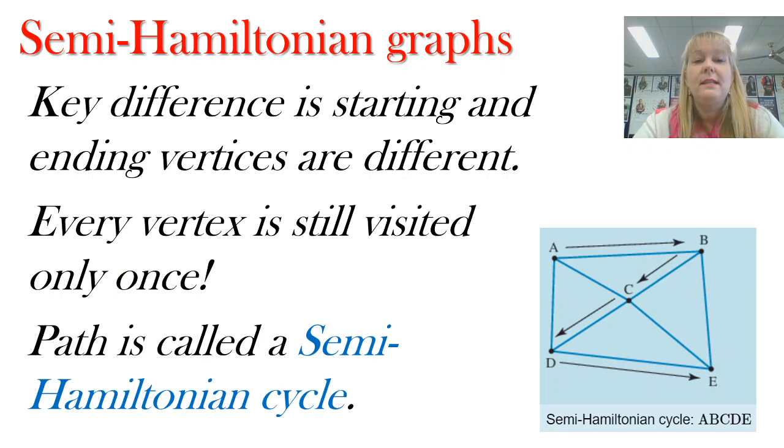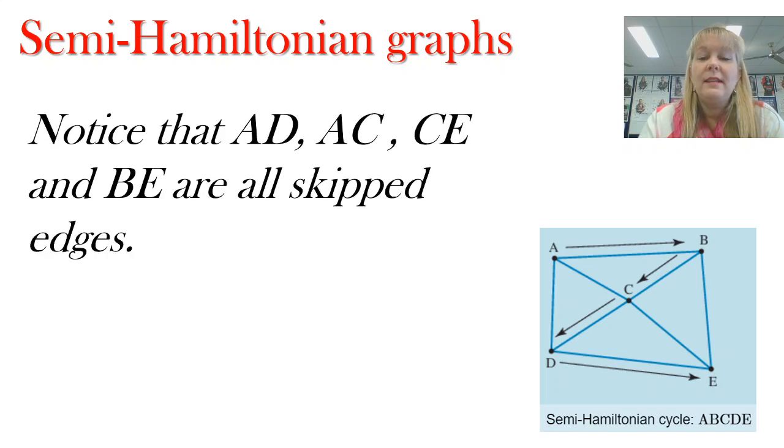Now, something else to notice is that in a semi-Hamiltonian graph, it's a bit of a mouthful, we've got one key difference. We don't have to start and finish in the same place. And if you remember with our Eulerian and semi-Eulerian graphs, that was the same key difference between those two. But with a semi-Hamiltonian graph, I'm still visiting every other vertex once. And my pathway through that is called a semi-Hamiltonian cycle. Notice again that I've skipped some of those edges as well. So I haven't had to pass through AC or BE or AD. And that's quite okay, as long as I visit every vertex.